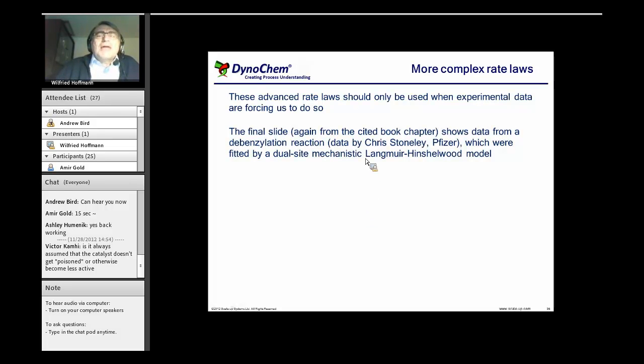This final slide is again from the cited book chapter where we used a debenzylation reaction by Pfizer. This was done using the dual-site mechanistic Langmuir-Hinshelwood model. The data showed that the run with 100 psi, so double the pressure of 50 psi, was even a little slower than the run at 50 psi. That is something you cannot get with the simplified kinetics.